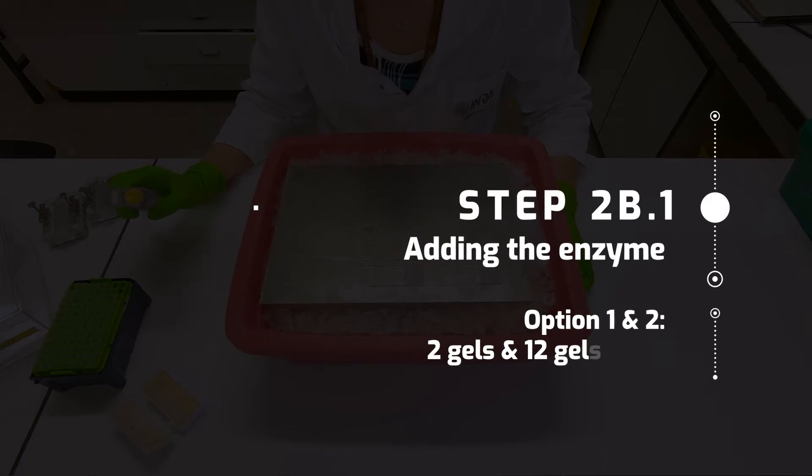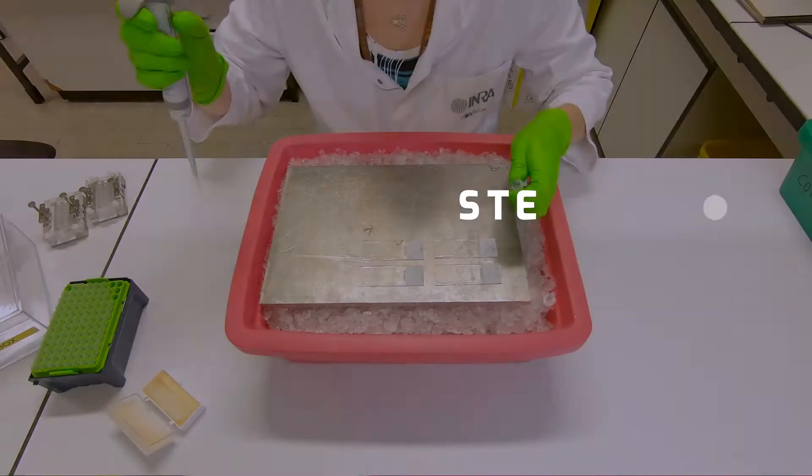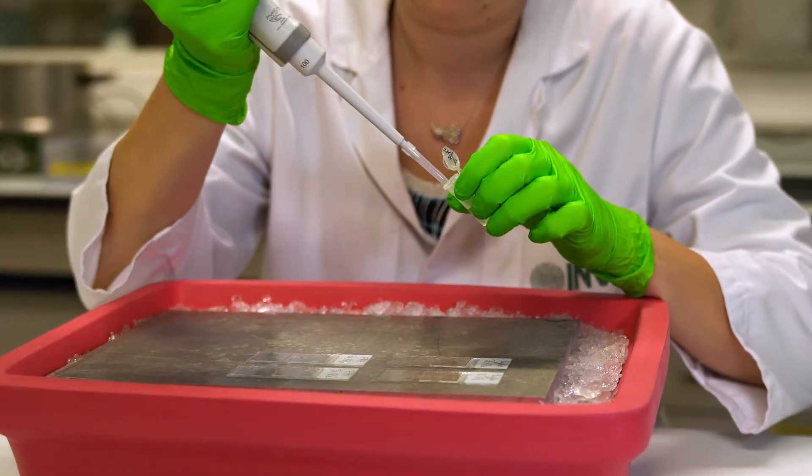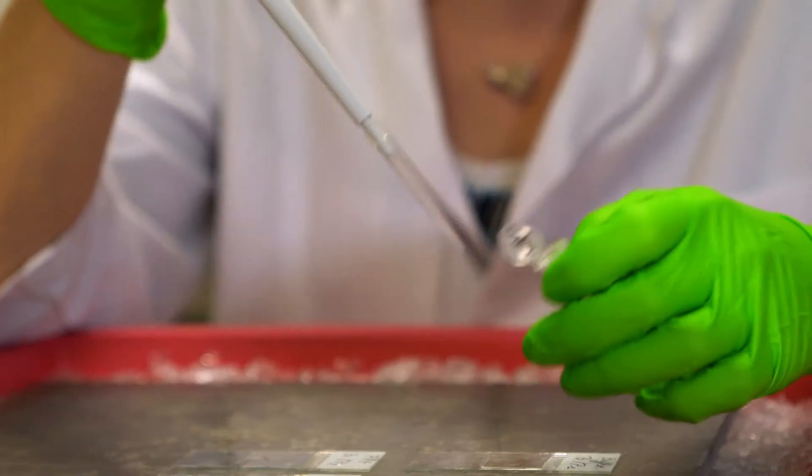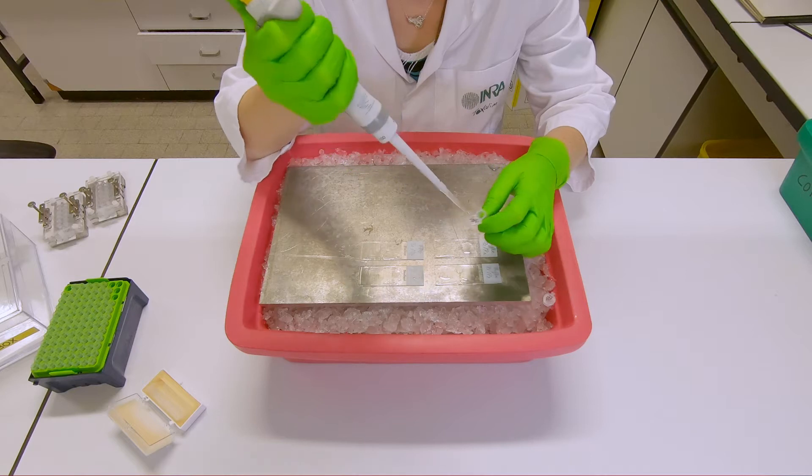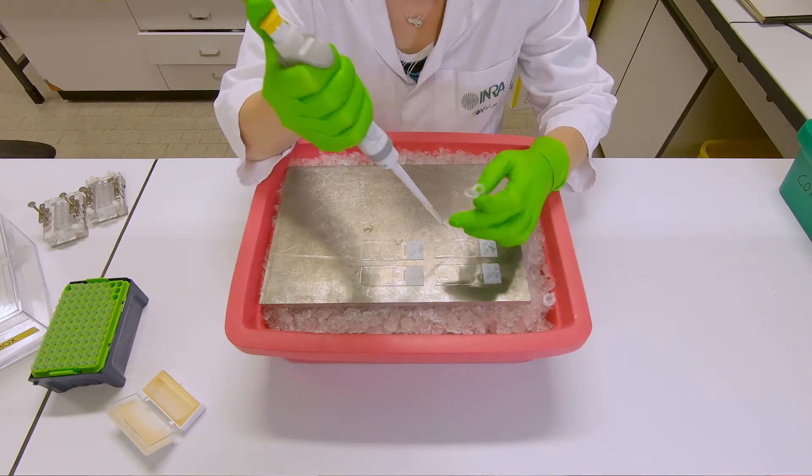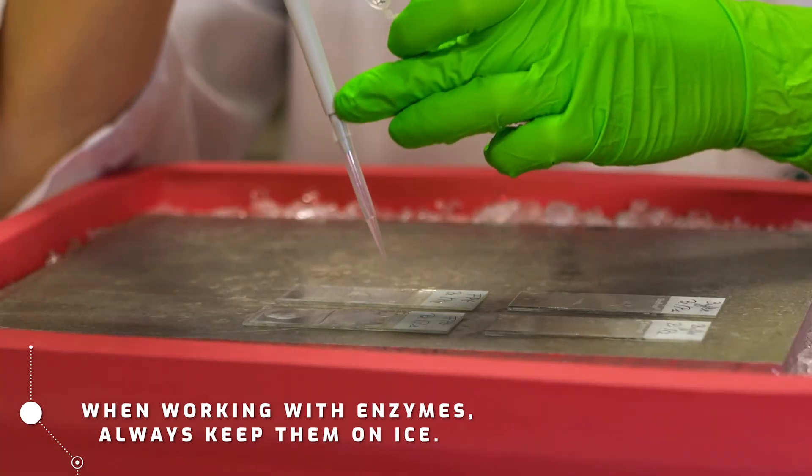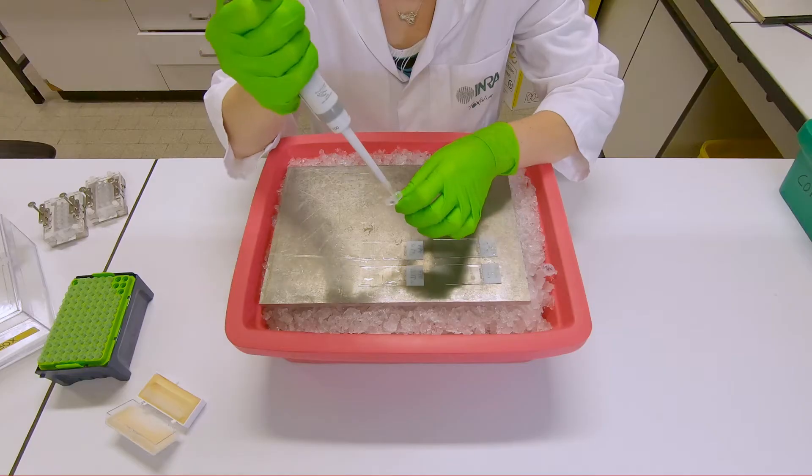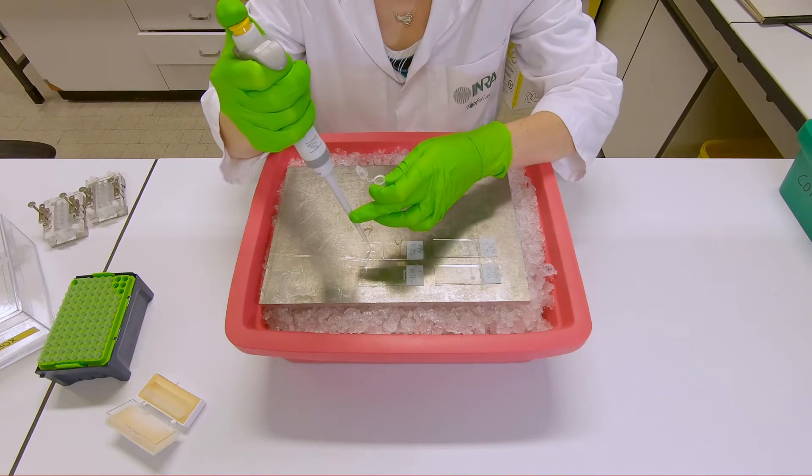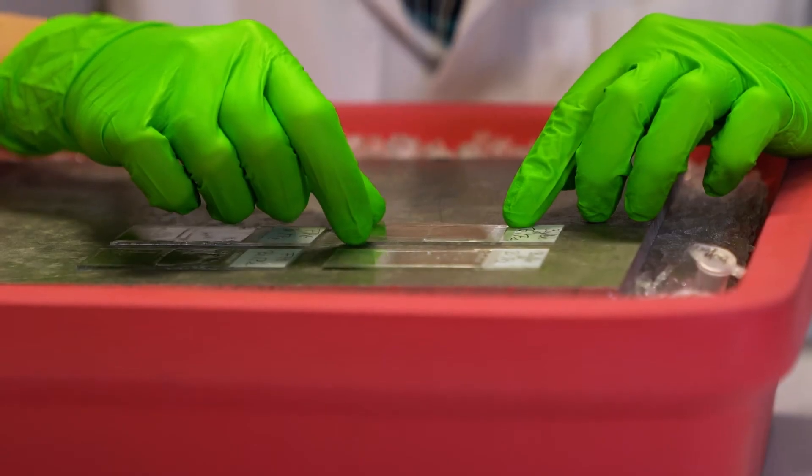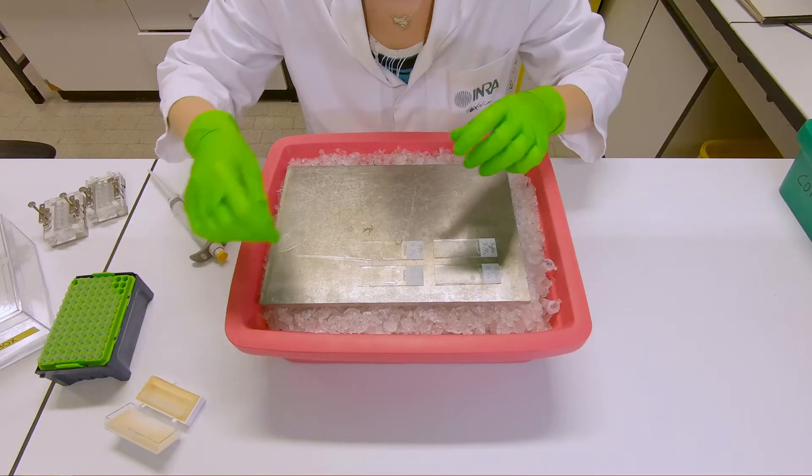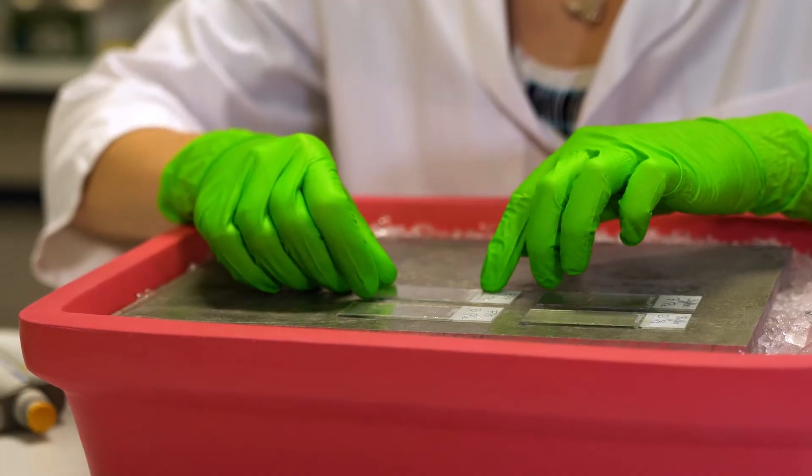After washing the gels with cold enzyme reaction buffer, transfer them to a cold metal plate and add 50 microliters of either the buffer or the enzyme to the corresponding gels. Then place a coverslip on top of the drops.